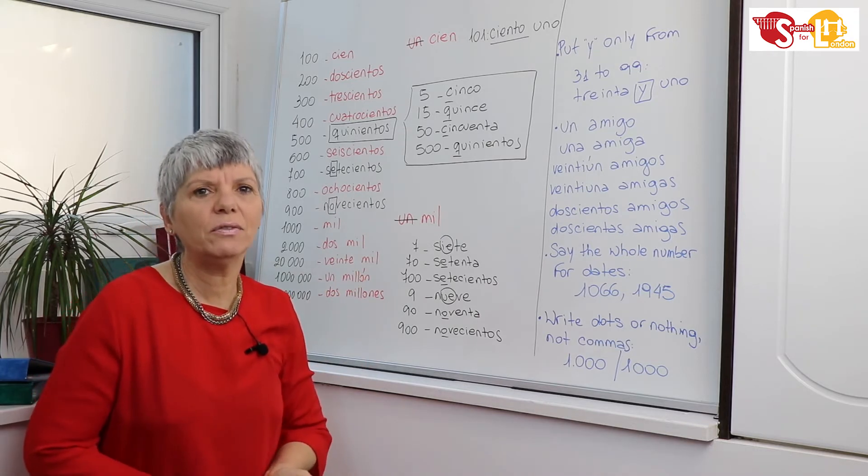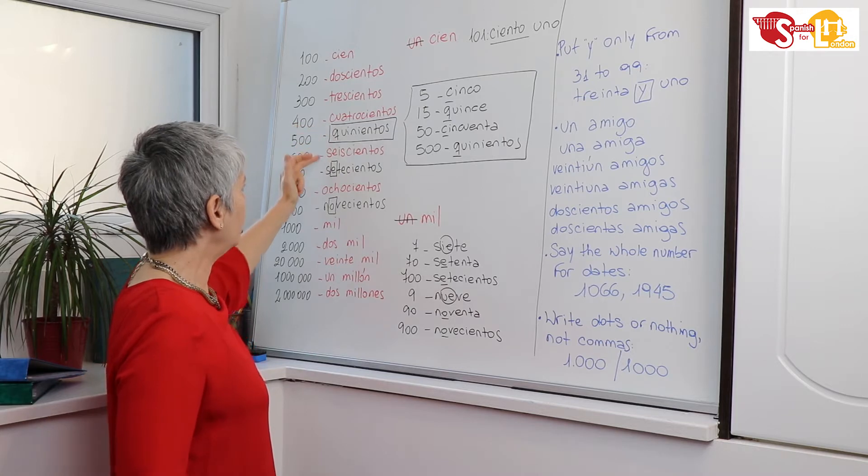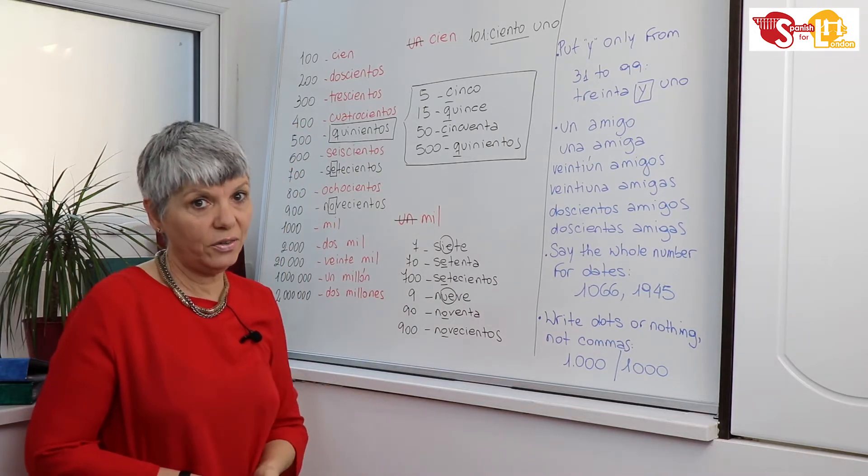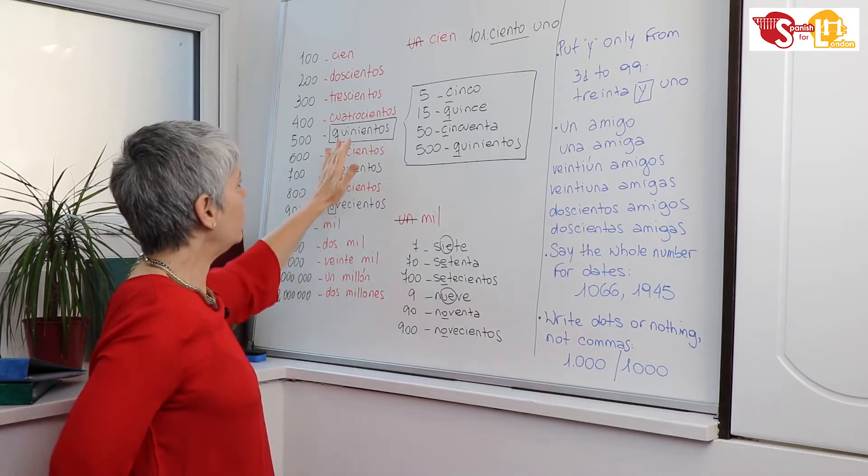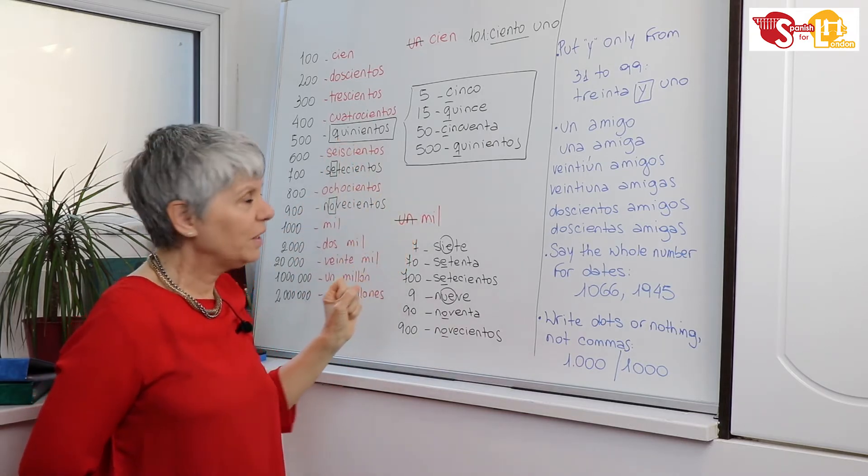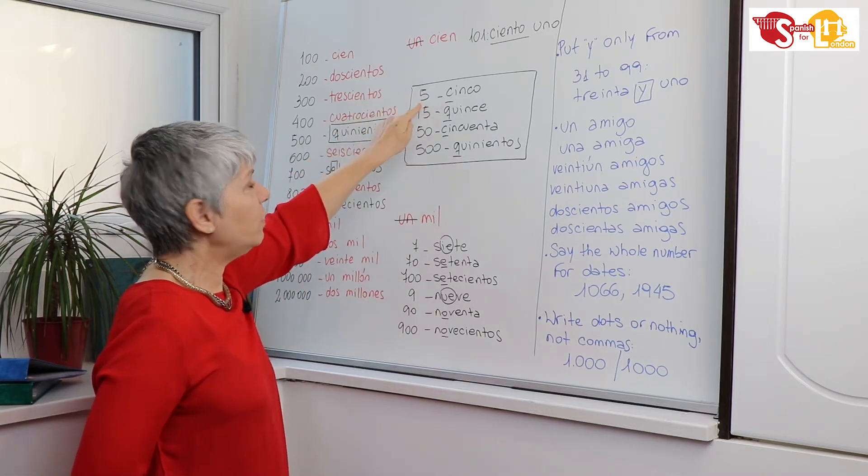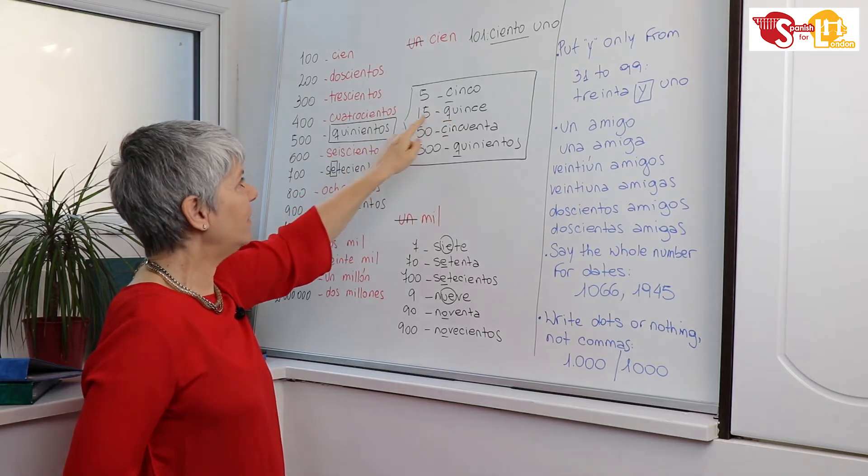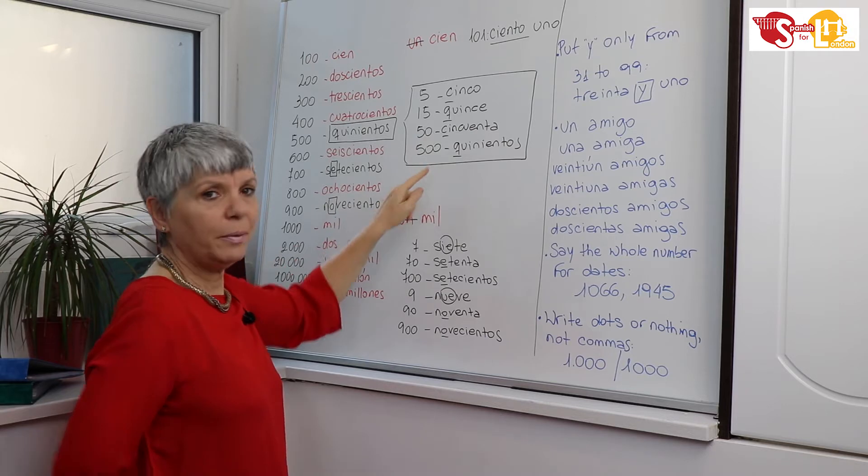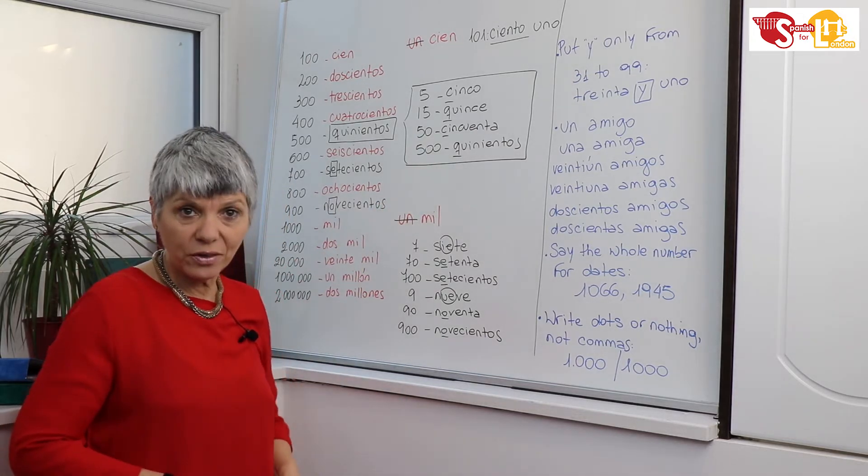Now let's see the irregular forms. We have three forms: quinientos, setecientos, and novecientos which are irregular. Let's see the first one, quinientos, which is really irregular. To remember this, think in cinco (5), quince (15), cincuenta (50), and quinientos (500). The numbers of five are really regular.